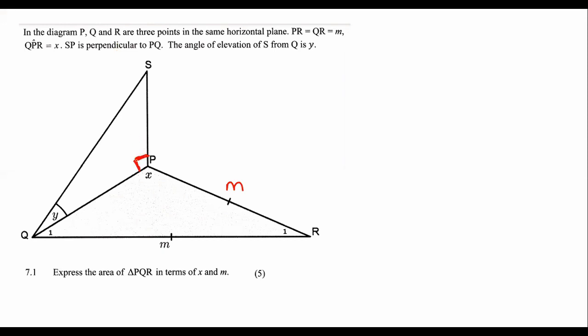That's 90 degrees over there. And then the angle of elevation is Y. For five marks, express the area of PQR in terms of X and M, the area.